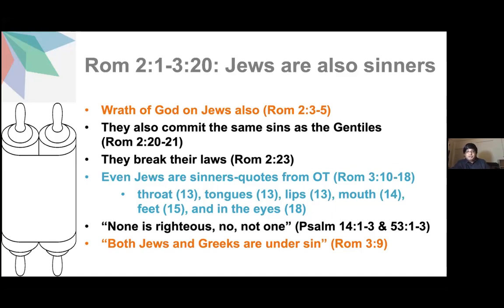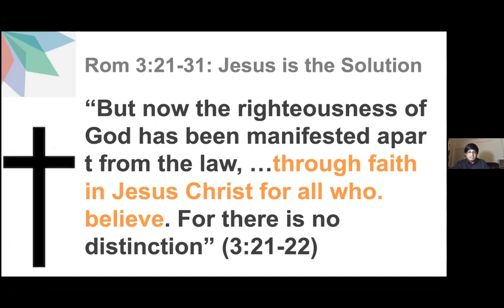Paul says both Jews and Greeks are under sin, and points out that Jewish people are also sinners. The way Paul brings in these things is by identifying how a person will be justified. In Romans 3:21 to 31, Paul stresses that a person can be justified by having faith in Jesus Christ alone. In Romans 3:21-22 he says: 'But now the righteousness of God has been manifested apart from the law through faith in Jesus Christ for all who believe.' There is no distinction: for both Jews and Gentiles, faith is the only means of achieving righteousness.